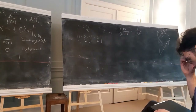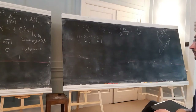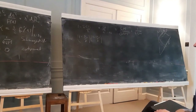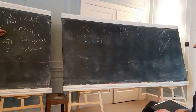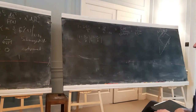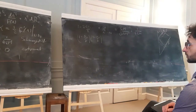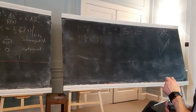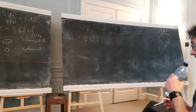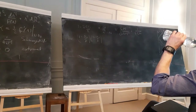The zeroth law: for these spherically symmetric black holes, κ is obviously constant on the horizon. But this is also true for more general black holes, even for Kerr, where the horizon is not spherically symmetric. κ is still constant everywhere on the horizon — analogous to temperature being constant in an equilibrium system.